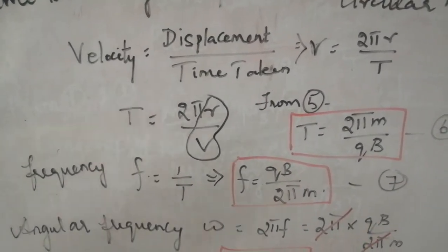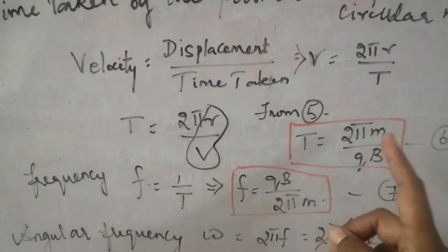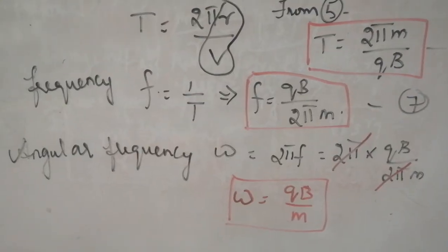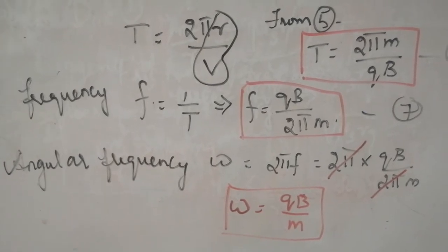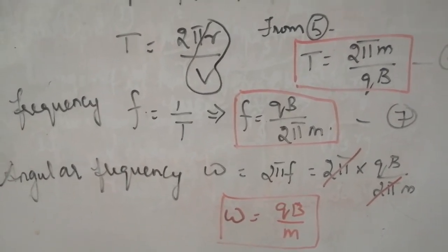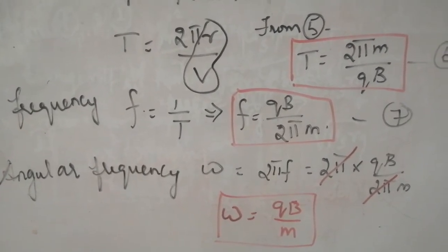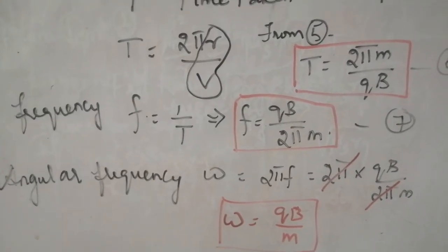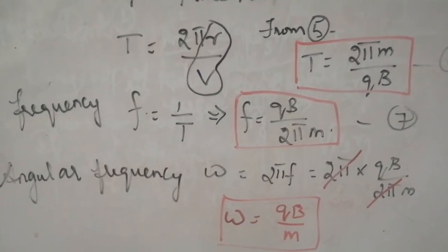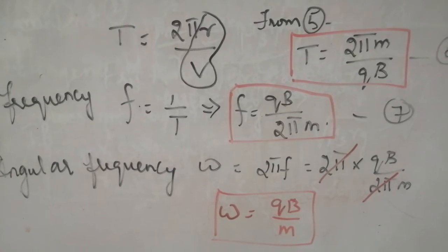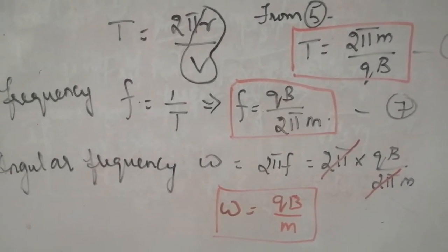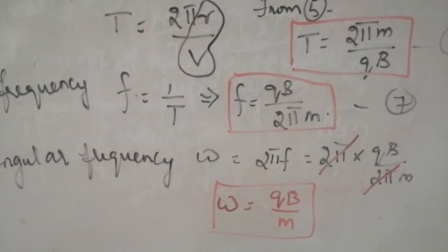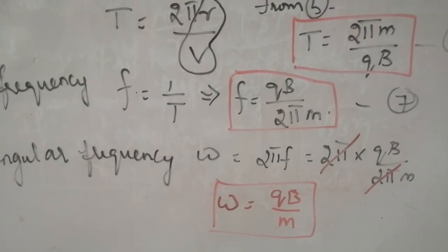Actually here the particle is making a circular motion, so you have to go for angular frequency. So angular frequency omega is equal to 2πF. We have the value of F in equation number 7. Substitute that F here. So it is 2π into instead of F it is QB by 2πM. 2π 2π will get cancelled off. Then the angular frequency value would be only QB by M.